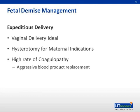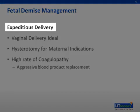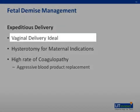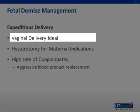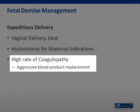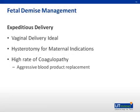Tragically, fetal demise secondary to hemorrhage or asphyxia does occur. In these instances, the care of the mother becomes the primary concern of the obstetrical team, and expeditious delivery should occur no matter the gestational age. Vaginal delivery is ideal because of the decreased maternal morbidity associated with this procedure. In these cases, the risk of maternal coagulopathy is greatly increased. DIC is a frequent occurrence and should be managed by rapid and aggressive blood product replacement. The latest data from the trauma literature indicate that massive transfusion should include PRBCs, FFP, platelets, and cryoprecipitate. Blood products should be administered based on the clinical exam, as laboratory evidence of coagulopathy often lags behind the clinical situation, which can lead to catastrophic hemorrhage.